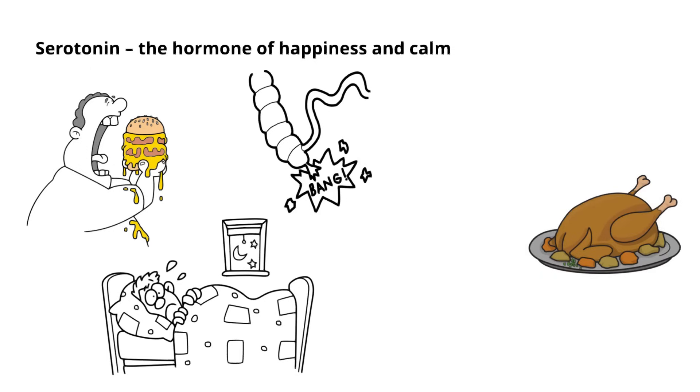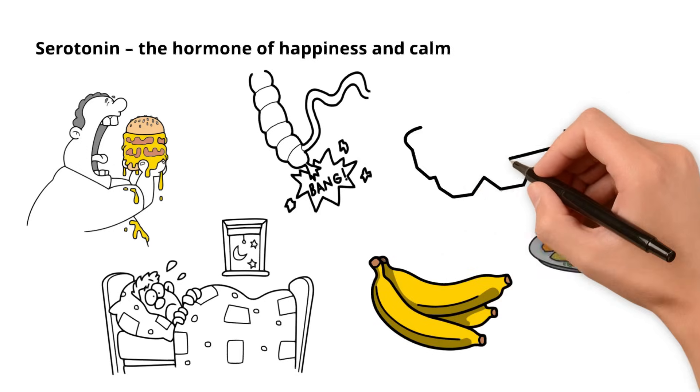Foods rich in tryptophan, such as turkey, bananas, and eggs, help boost this hormone.